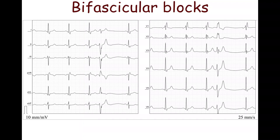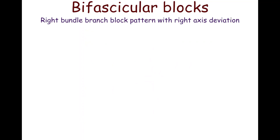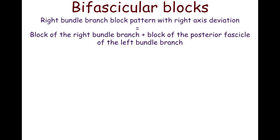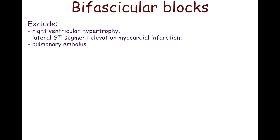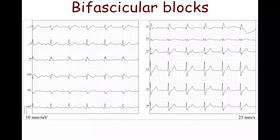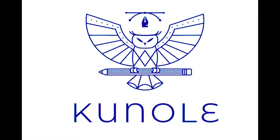The combination of right bundle branch block pattern with right axis deviation also belongs to bifascicular blocks. In this case, both the right bundle branch and the posterior fascicle of the left bundle branch are blocked. However, other causes of right axis deviation such as right ventricular hypertrophy and lateral ST segment elevation myocardial infarction should be excluded. The ECG shows right bundle branch block with right axis deviation, and the QRS complex width is 140 ms.